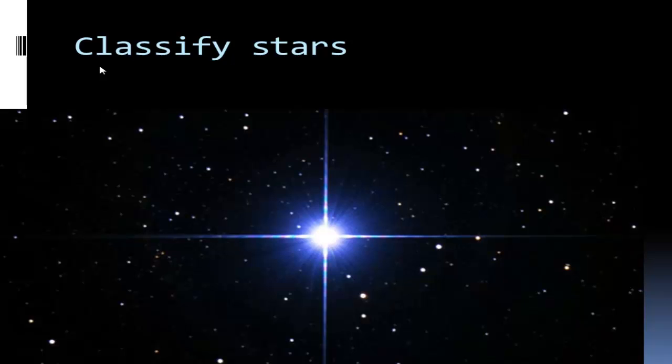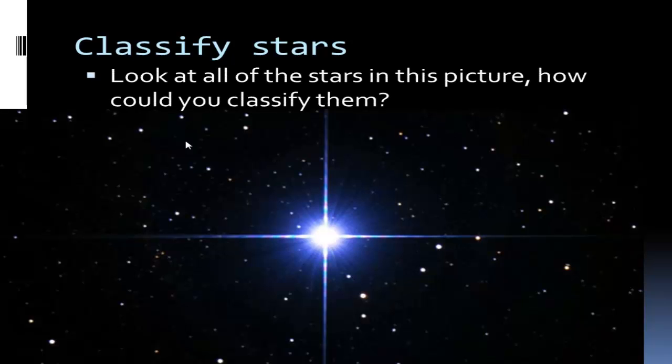In the last vodcast we looked at classifying stars by color, which gives us information about surface temperature. If we take a look at this picture, we can see different colored stars, but I want you to look at how we can separate stars by their brightness - how bright they appear or how bright they truly are.